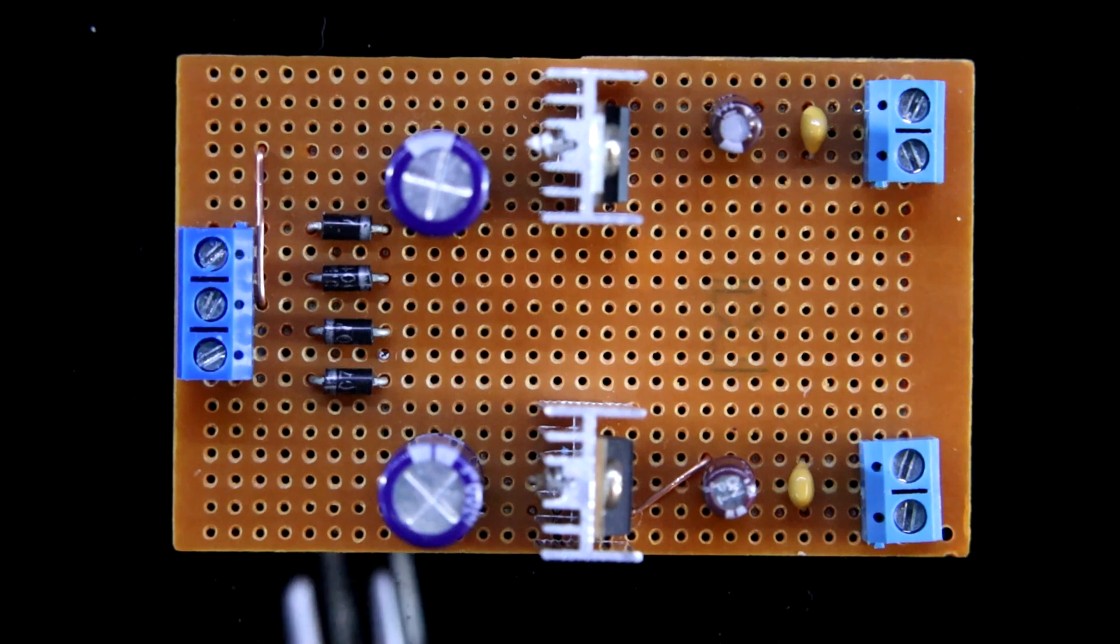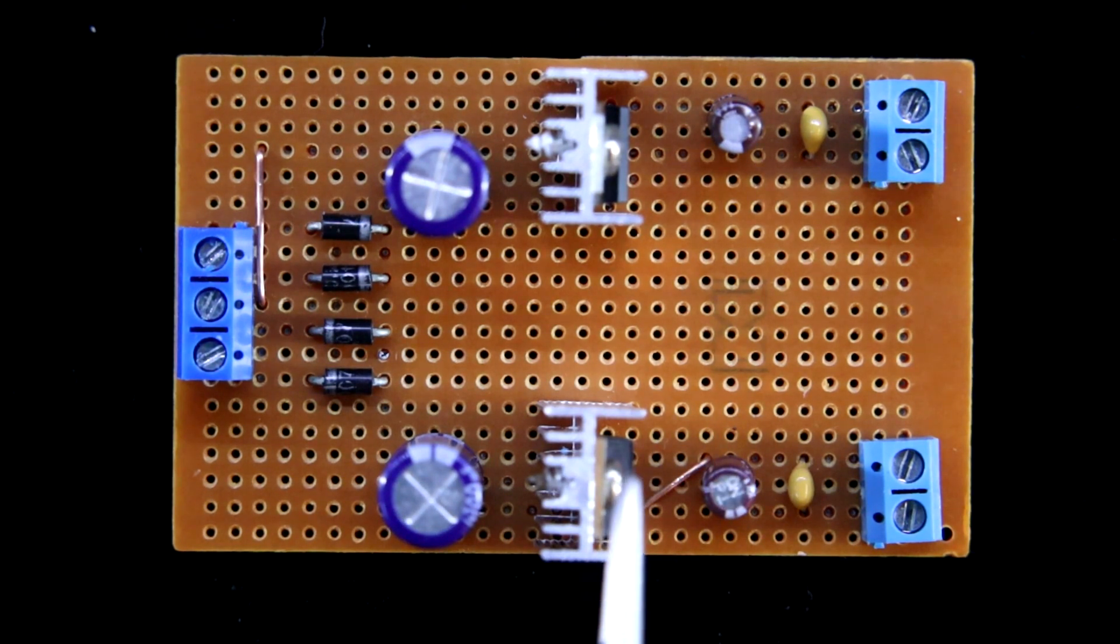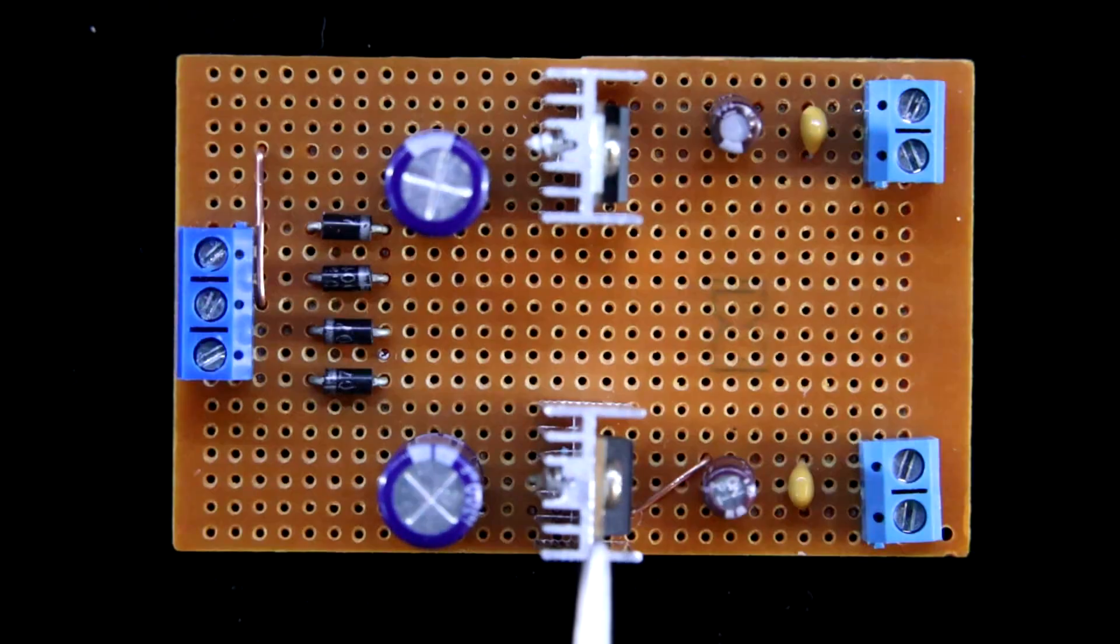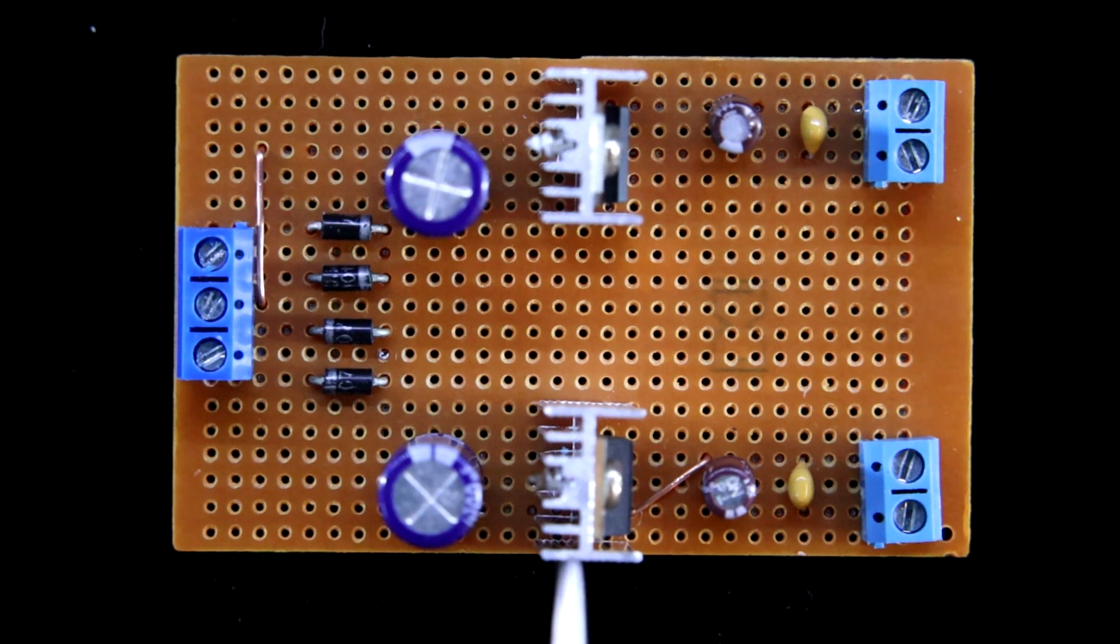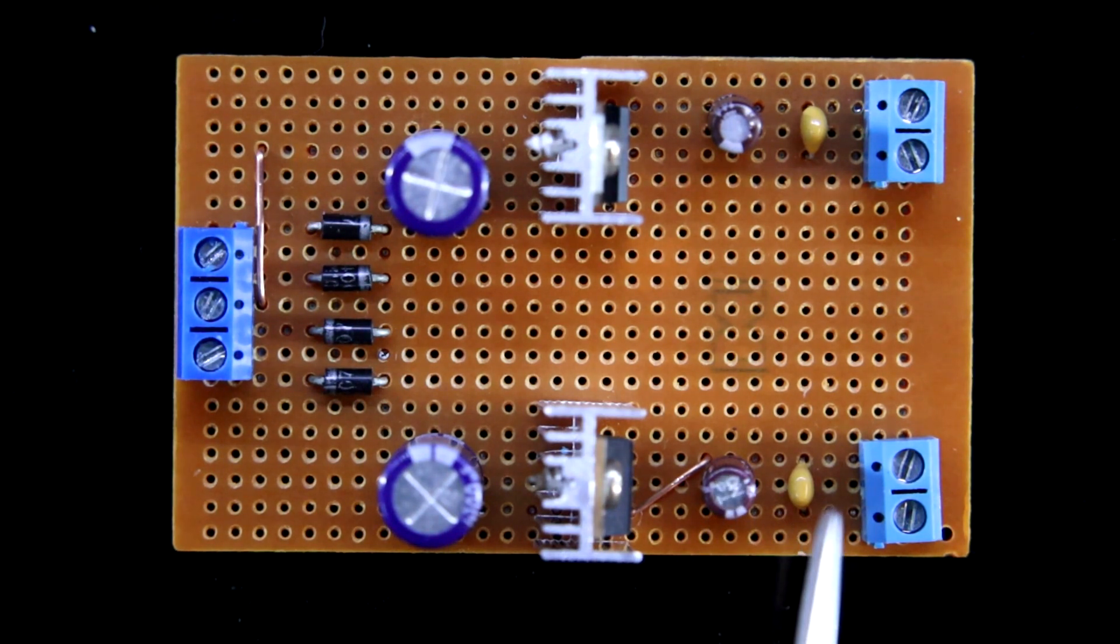And after filtering, I have connected the voltage regulator ICs 7805 and 7905, then electrolytic capacitor and ceramic.